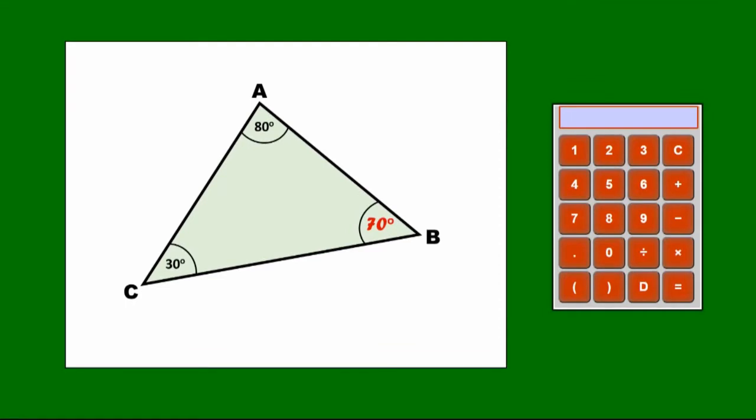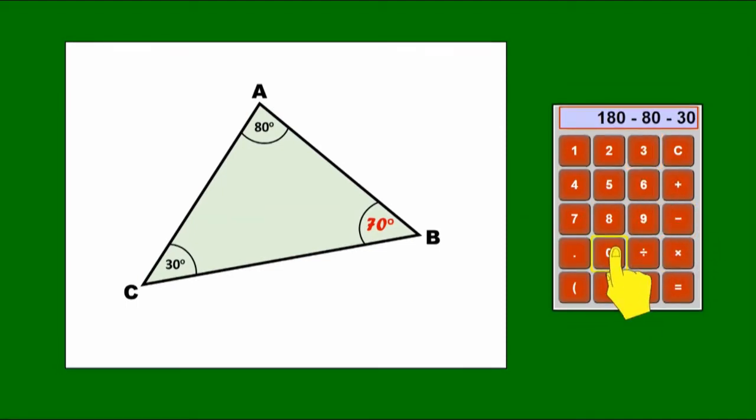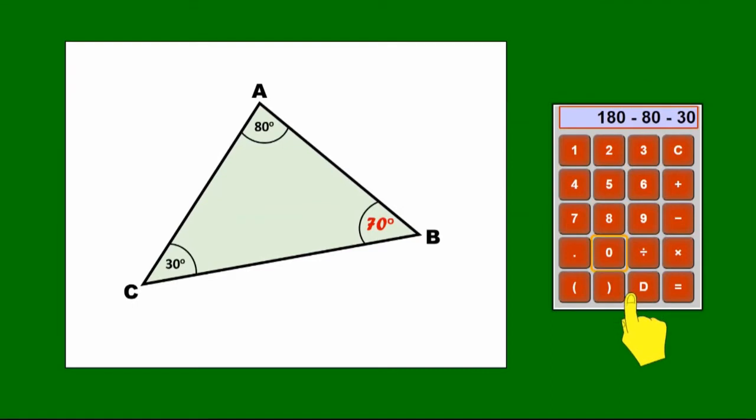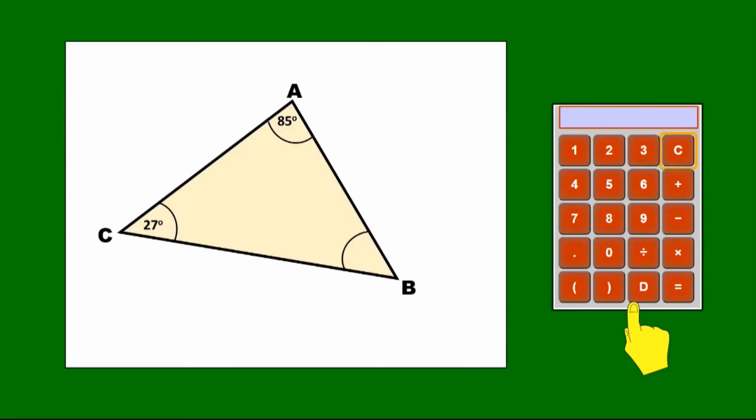But what's the best way to do this on the calculator? Well, rather than doing two operations, adding the 80 and the 30 and then taking away from 180, we could do it all in one go. So we could start with the number of degrees in the whole triangle, and then we could subtract the 80 and then we could subtract the 30, and this could all be done in one line on the calculator to give us that answer of 70.